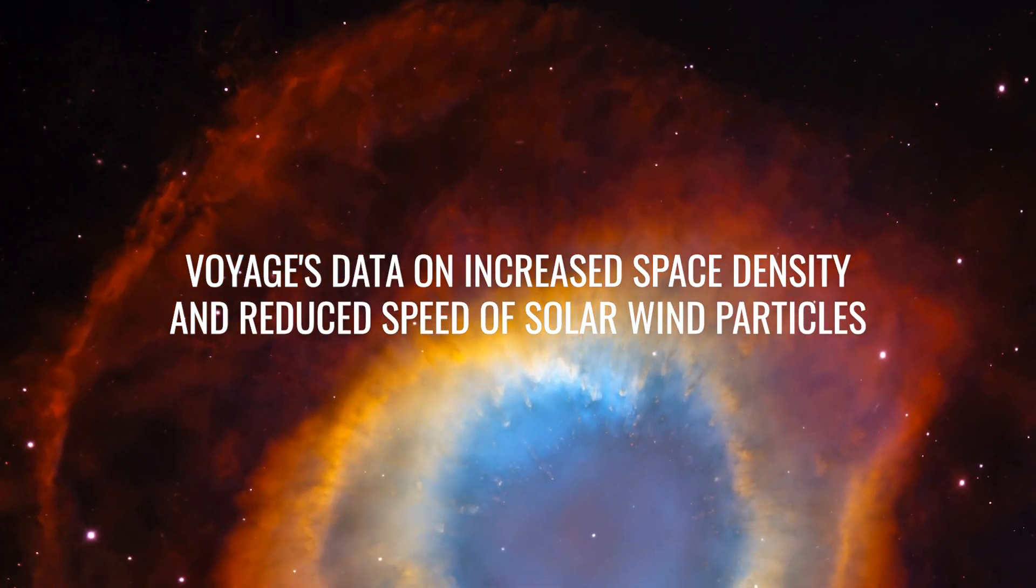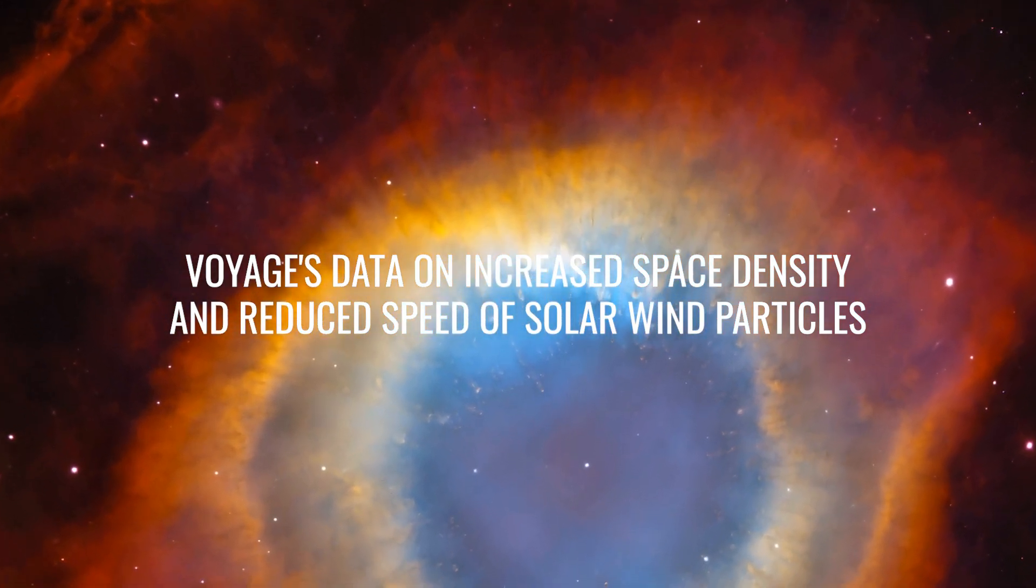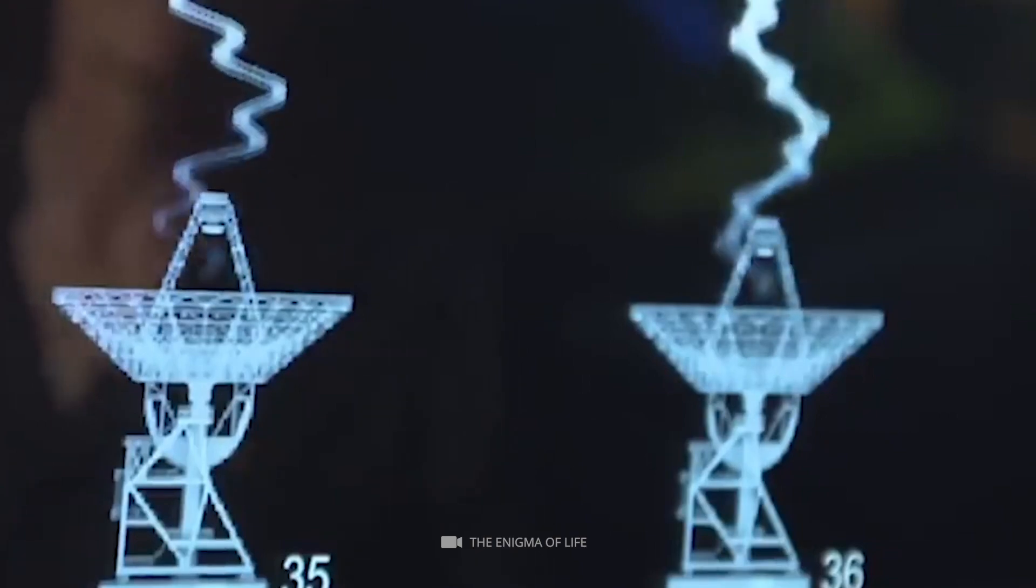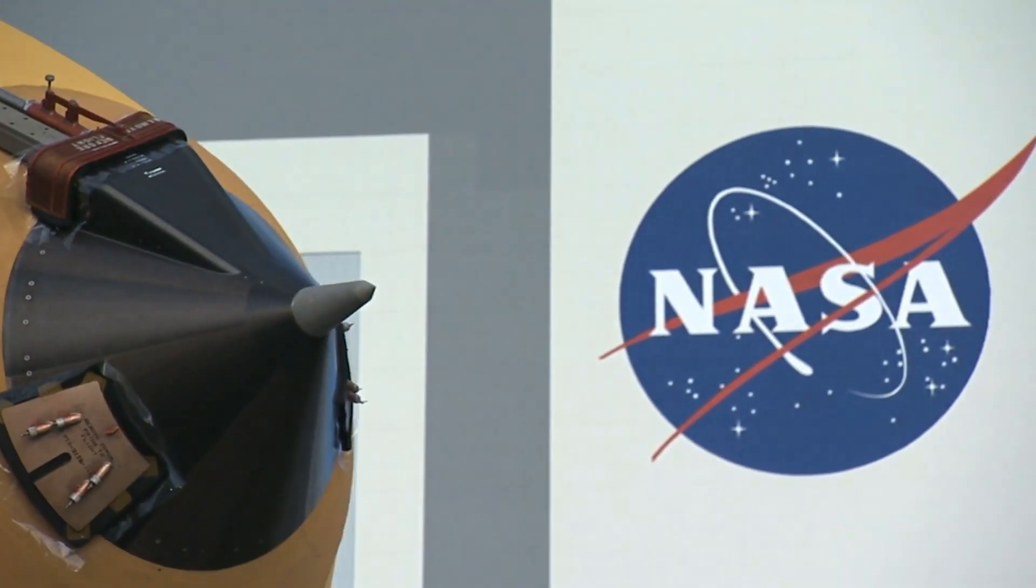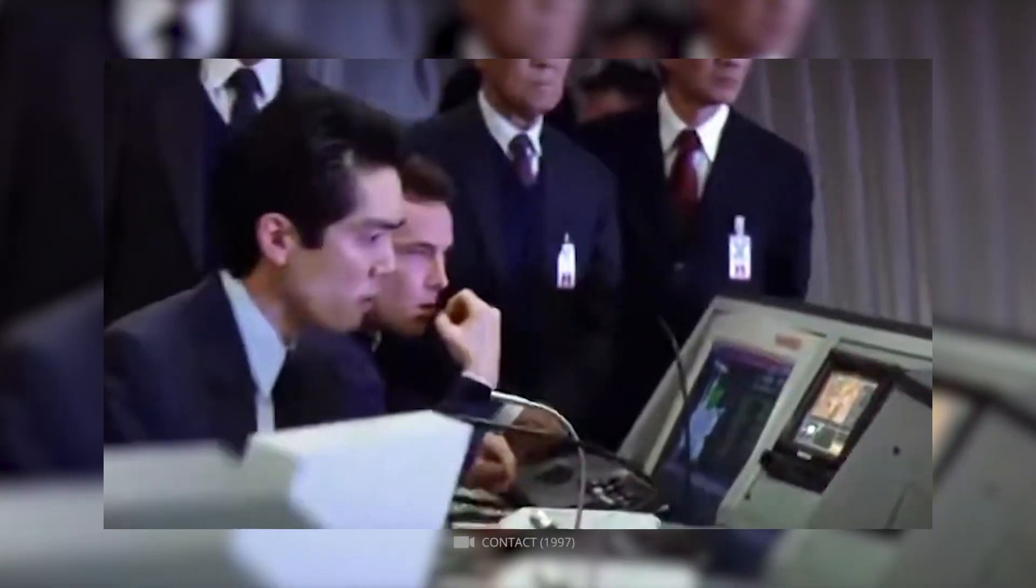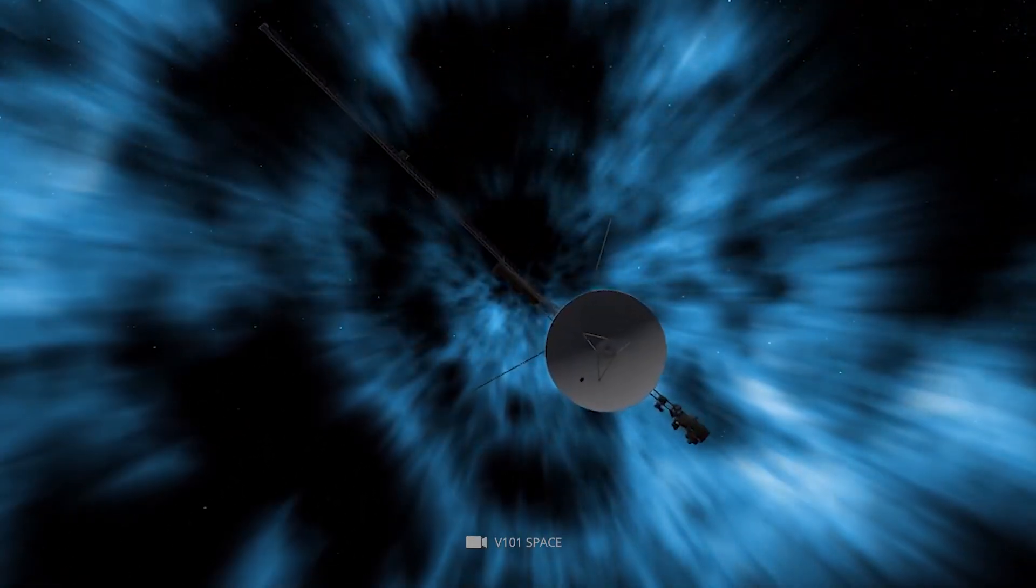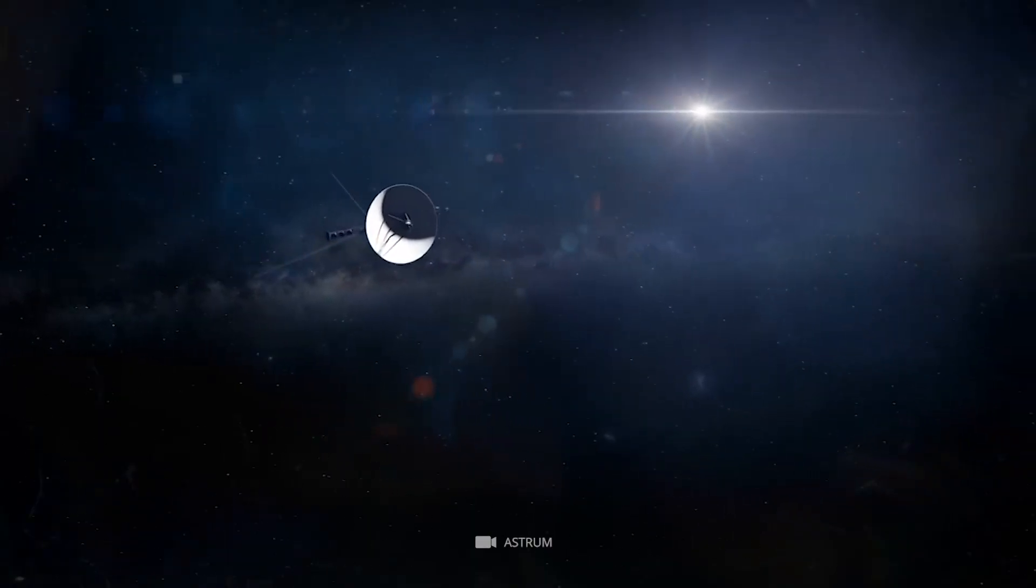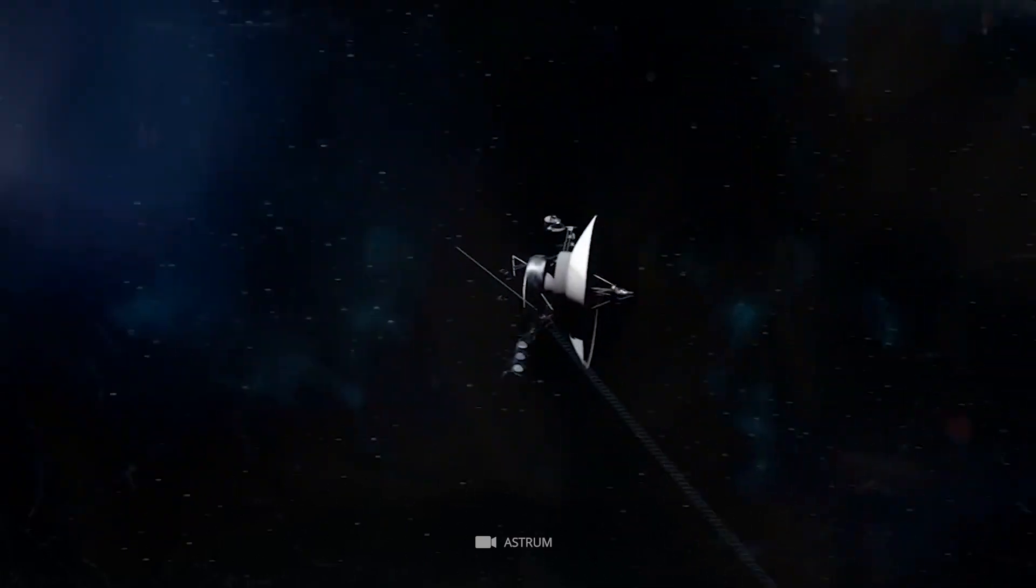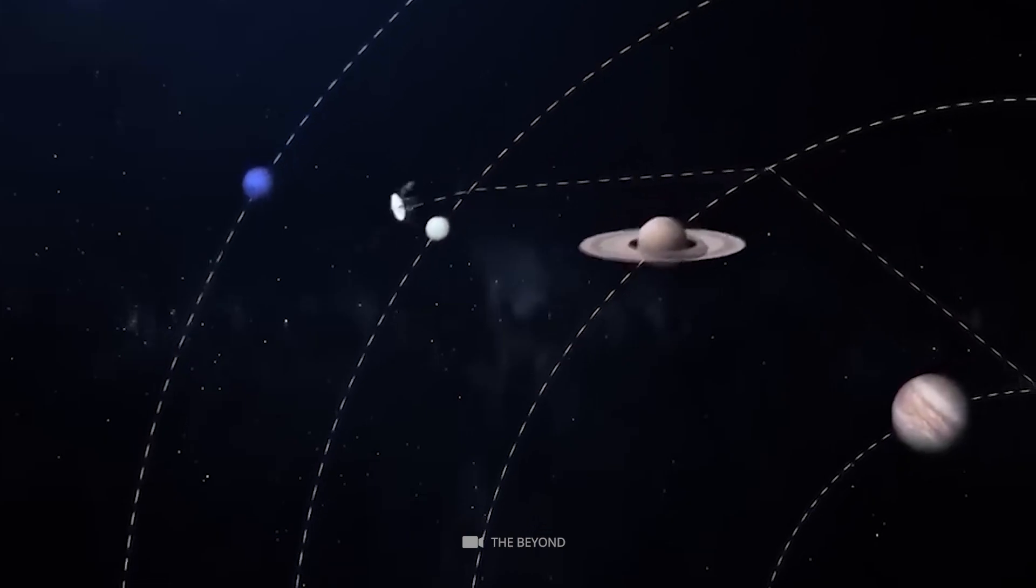Voyager's Data on Increased Space Density and Reduced Speed of Solar Wind Particles. Lately, Voyager 1 sent back some concerning data that showed increased space density around the spacecraft and decreased speed of solar wind particles. NASA scientists deduced from this data that the spacecraft recently entered a new region of space, different from the one it has been in for the past four decades. The observations also meant that Voyager 1 was possibly going into another interstellar medium, and therefore getting nearer to the very edge of the solar system.